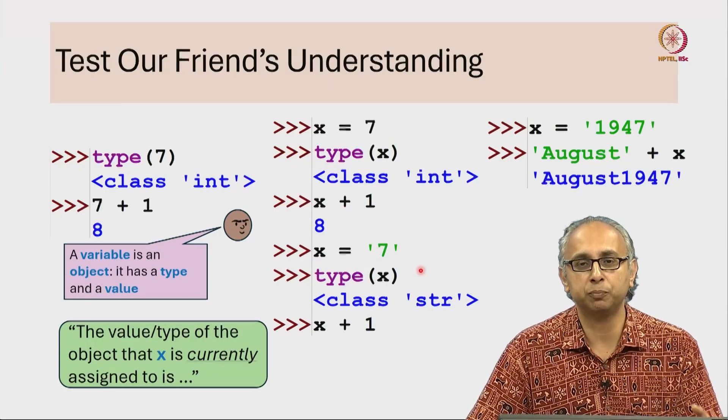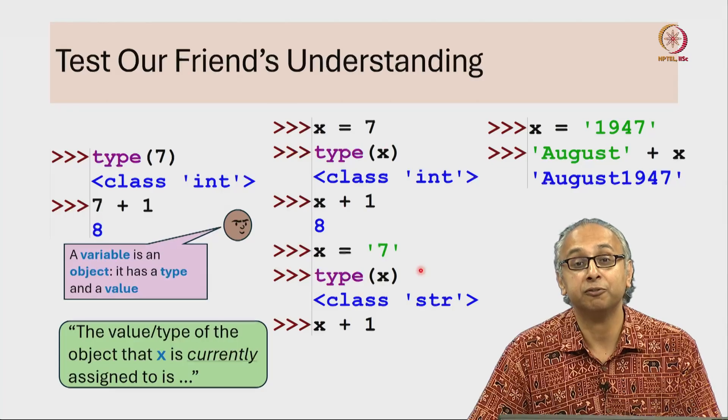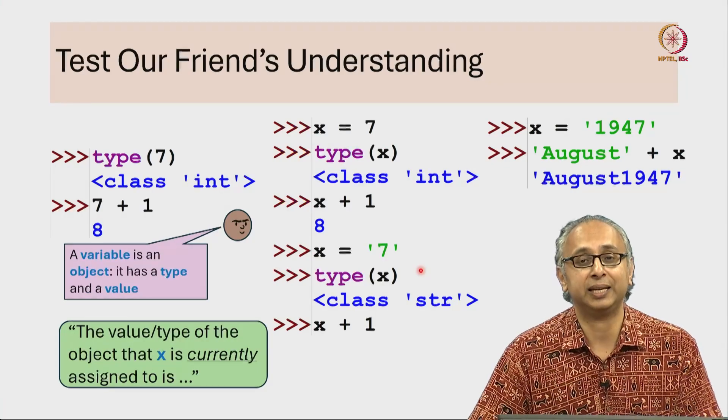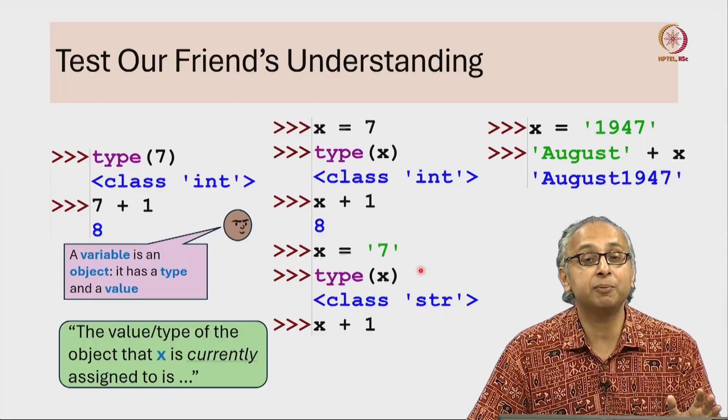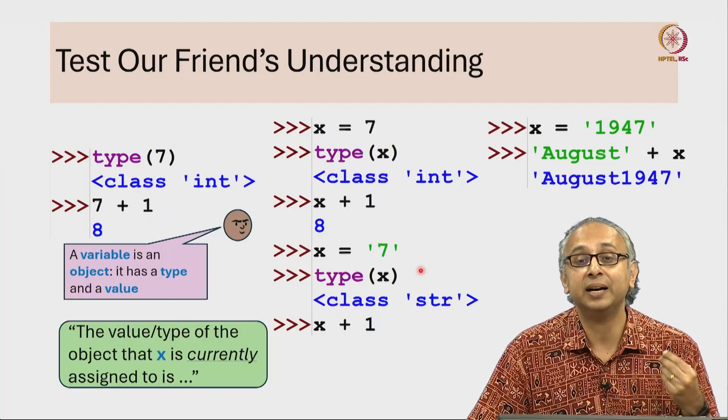And similarly, it could move to an object of a different value. So it's the object that has a value, it's the object that has a type. The variable itself is merely a label.